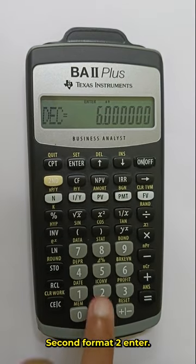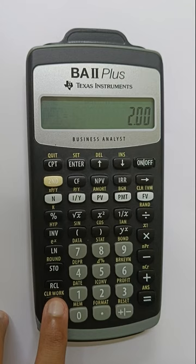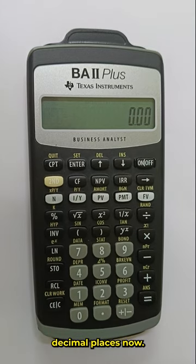Second format to enter. So we can see we have two decimal places now.